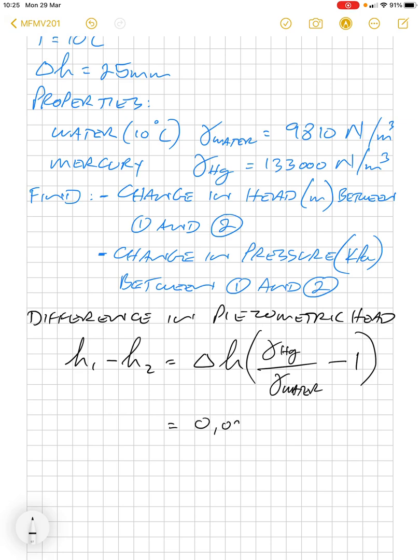We know delta h is 0.025 and gamma hg is 133,000 and gamma water is 9,810 minus one. So therefore h1 minus h2 gives us 0.31 meters, 310 millimeters.